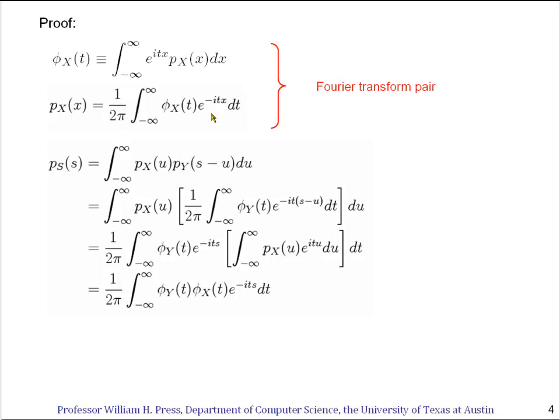And we see that this is nothing more than the characteristic function of x. So we've proved that p_s(s) is this thing on the product of phi_y and phi_x. But what is this thing? This thing is just an inverse Fourier transform by itself.